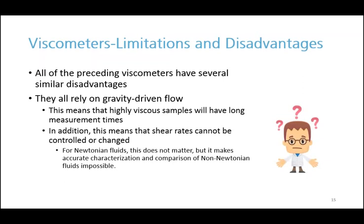All of these preceding viscometers have several similar disadvantages — they all rely on gravity-driven flow. This makes them easier to manufacture and produce, which explains why they were the original viscometers. But it means that highly viscous samples will have long measurement times to the point of being impractical. In addition, shear rates cannot be controlled or changed. For simple Newtonian fluids this doesn't matter, but it makes accurate characterization and comparison of non-Newtonian fluids impossible, and in some cases, certain non-Newtonian fluids cannot be measured at all depending on their low shear viscosity.